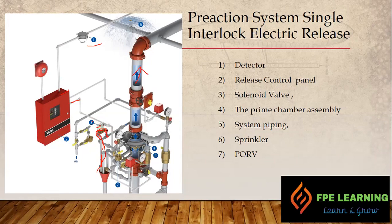Once the solenoid valve opens, it decreases the pressure in the priming chamber, allowing water to go into the system. The priming chamber collapses, water passes through the valve and internal check valve, and water enters the system piping. If there is a real fire, the bulb fuses and water discharges to extinguish the fire. If it is not a real fire, water enters the piping but does not discharge because the sprinkler head remains closed.